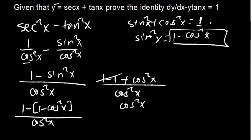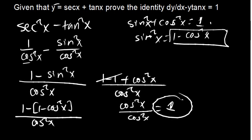Distributing the negative: 1 minus 1 gives 0, then negative negative gives plus cos squared x, all over cos squared x. The terms 1 and minus 1 cancel to 0, leaving cos squared x over cos squared x, which equals 1. This is how you prove it.